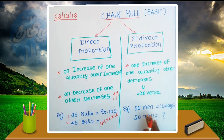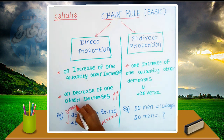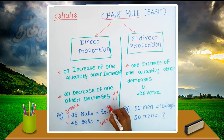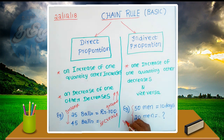If the number of balls increases, that is a direct proportion. However, if you have more men, the work is less. For example, if you have 50 men the value is low, but with 30 men you see more. In this situation, we choose the indirect proportion.